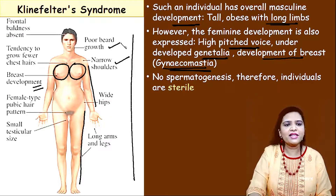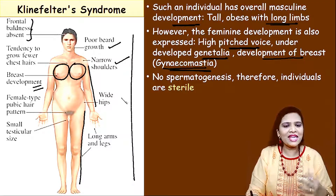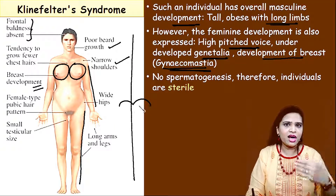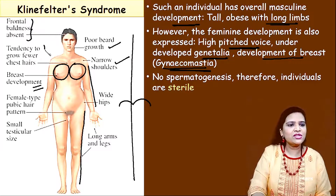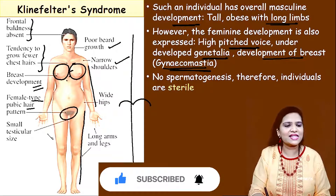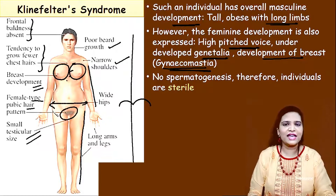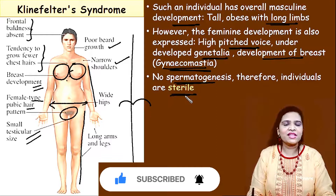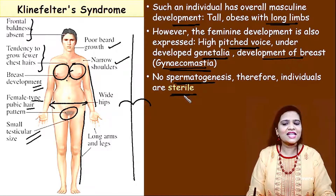The shoulders are narrow. Beard growth or beard development is poor. Frontal baldness — the typical M-shaped male hairline that develops into front baldness — is absent. There is a tendency to grow fewer chest hairs, and pubic hair is present as in females. The hips are wider like in females, and testicle size is small. Importantly, these individuals are sterile — they don't have spermatogenesis and cannot reproduce.